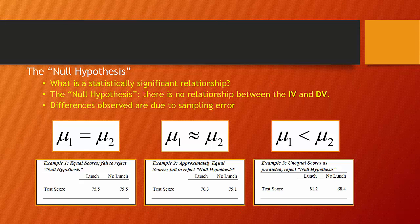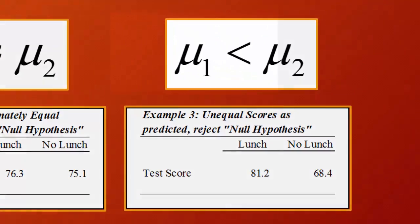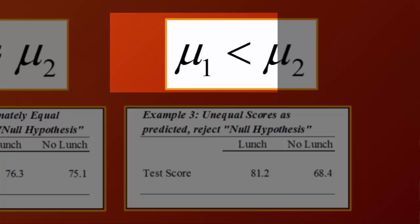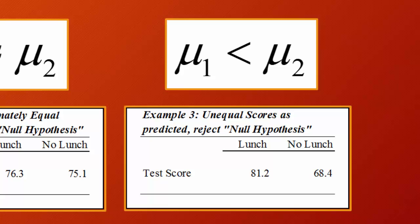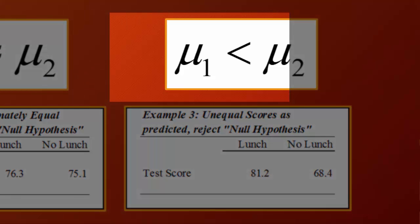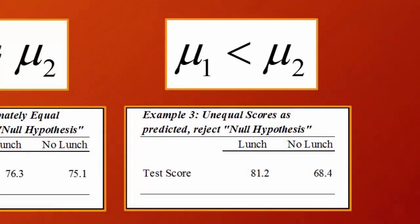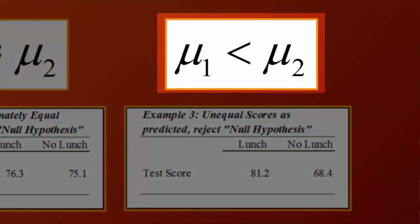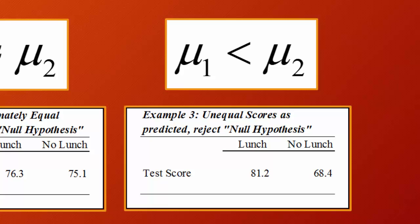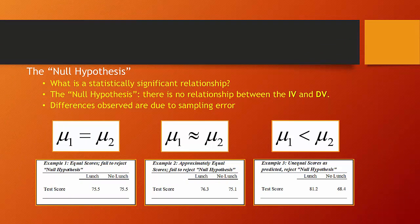The null hypothesis is symbolically shown as the sample means of one population being equal to the sample means of a second population. In our example, the test scores of children who had lunch being equal to the scores of children who did not eat lunch. That is contrary to our research hypothesis, which says that children who do not eat lunch will perform less well than those who do eat lunch.